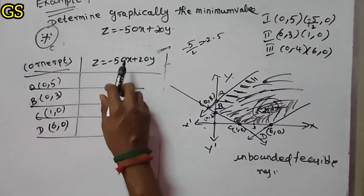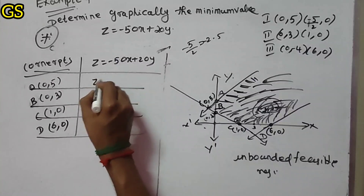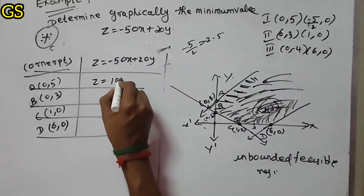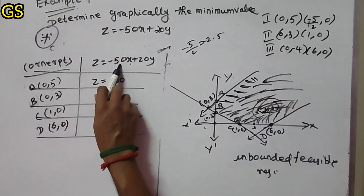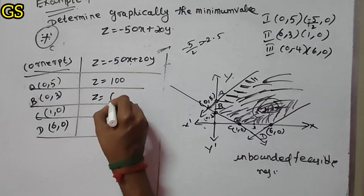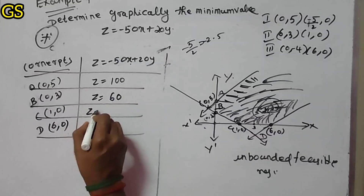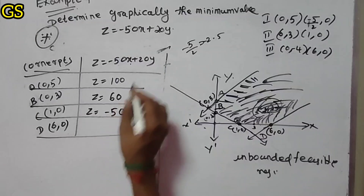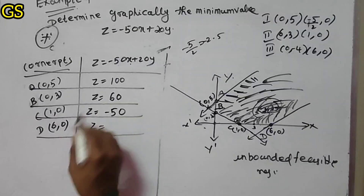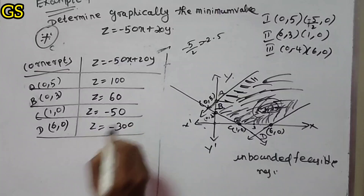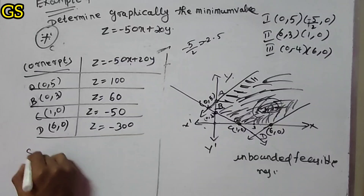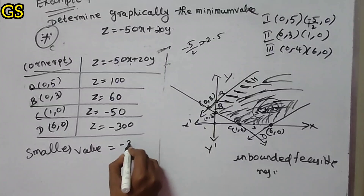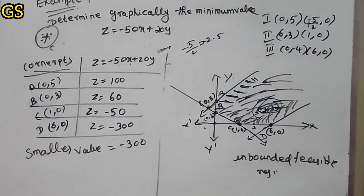At A (0, 5): Z equals 20 times 5 equals 100. At B (0, 3): Z equals 20 times 3 equals 60. At C (1, 0): Z equals minus 5 times 1, so Z equals minus 5, which gives 0. At D (6, 0): Z equals minus 5 times 6 equals minus 300. The smallest value is minus 300, so the minimum value is minus 300.